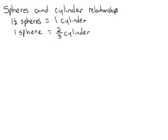We learned that if you have a sphere and a cylinder with the same height and radius, you can get one and a half spheres into one cylinder, or one sphere takes up two-thirds of a cylinder.